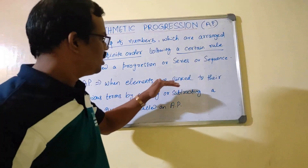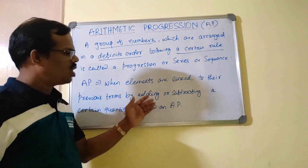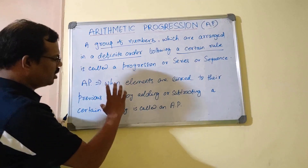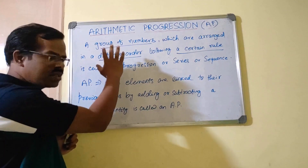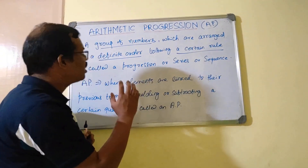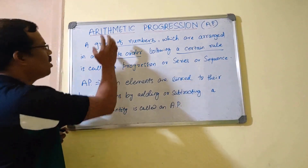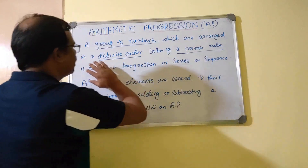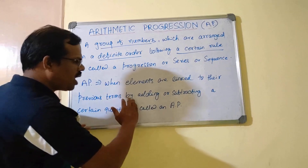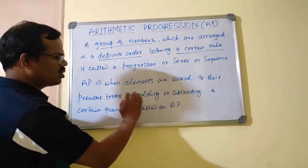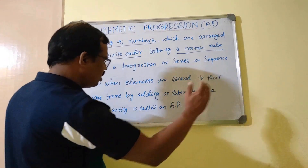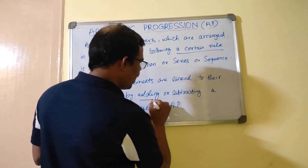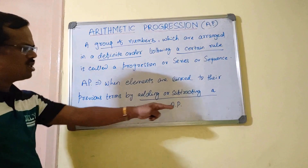When elements are linked to their previous terms by adding or subtracting a certain quantity, it is called an AP. This definition still follows the same criteria: a group of numbers, they are linked to their previous terms so there is a definite order, and the rule is that you either add or subtract a certain quantity. So you will either add or subtract a certain fixed quantity — that is the rule that has to be followed.